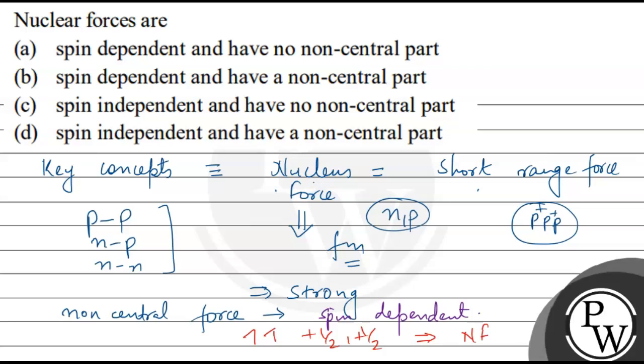And if the spin is anti-parallel, it means one is plus half and one is minus half of the spin quantum number, so the nuclear force will be weaker.